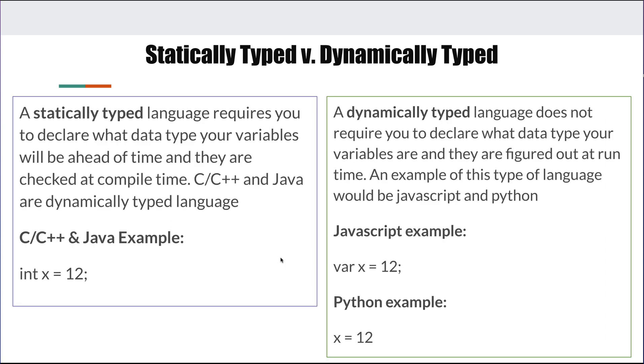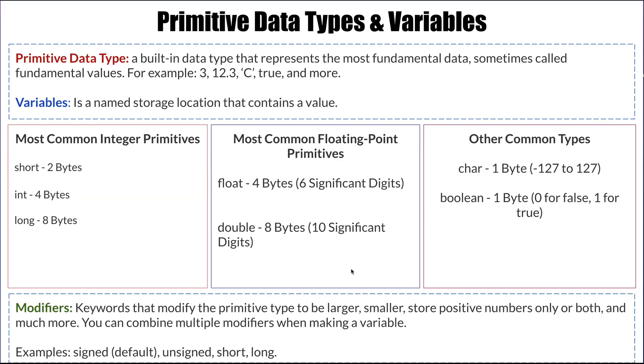Now, when talking about primitive data types, you're going to see a lot of different stuff from different languages. You're going to come across this conversation about statically typed versus dynamically typed. A statically typed language, which is what we'll be doing for C and C++, is a language that requires you to declare the data type before you use it. These are checked at compile time. An example at the bottom here is int x equals 12. We had to declare that it was an integer with int, give it a name, and assign it a value, end it with a semicolon.